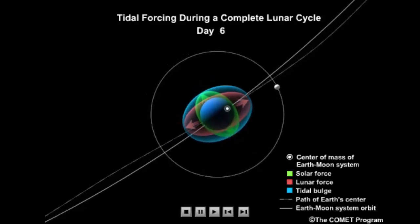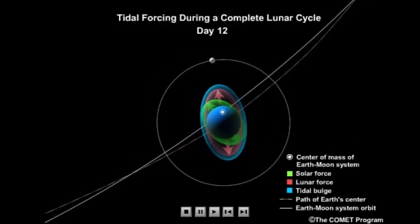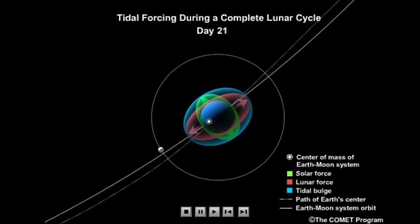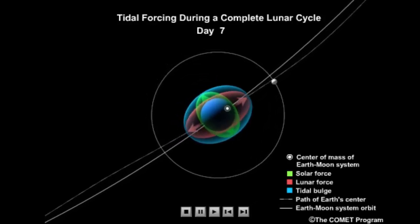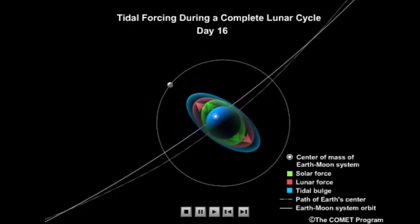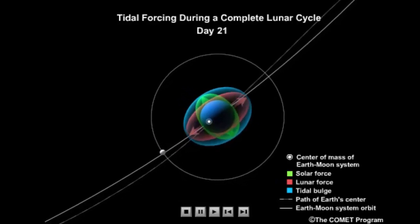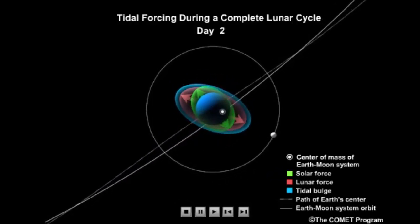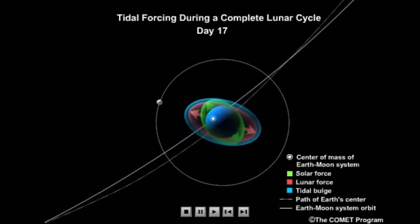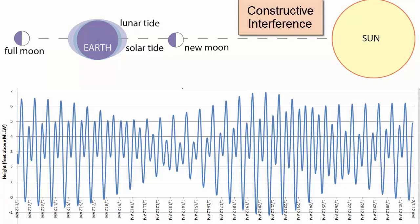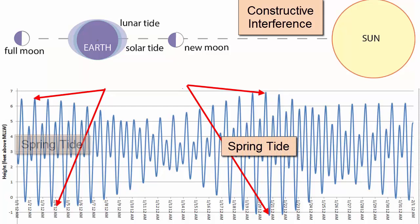Now we can combine the lunar bulge model of tides with the concepts of constructive and destructive wave interference as discussed in the waves video tutorials to explain the periodicity of spring and neap tides. The lunar and solar bulges are continually interfering with each other. As the Moon moves around the Earth every 29 days, it will carry the lunar bulges into phase and out of phase with the solar bulges. When the two are in phase, which happens during full and new moons, the two bulges constructively interfere and we experience a much greater tidal range with lower lows and higher highs, spring tides.